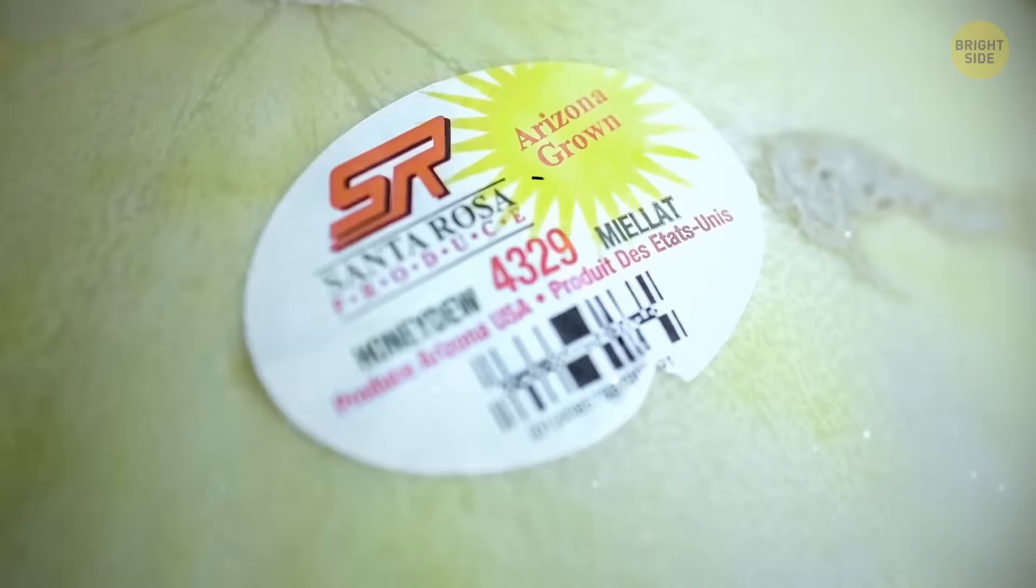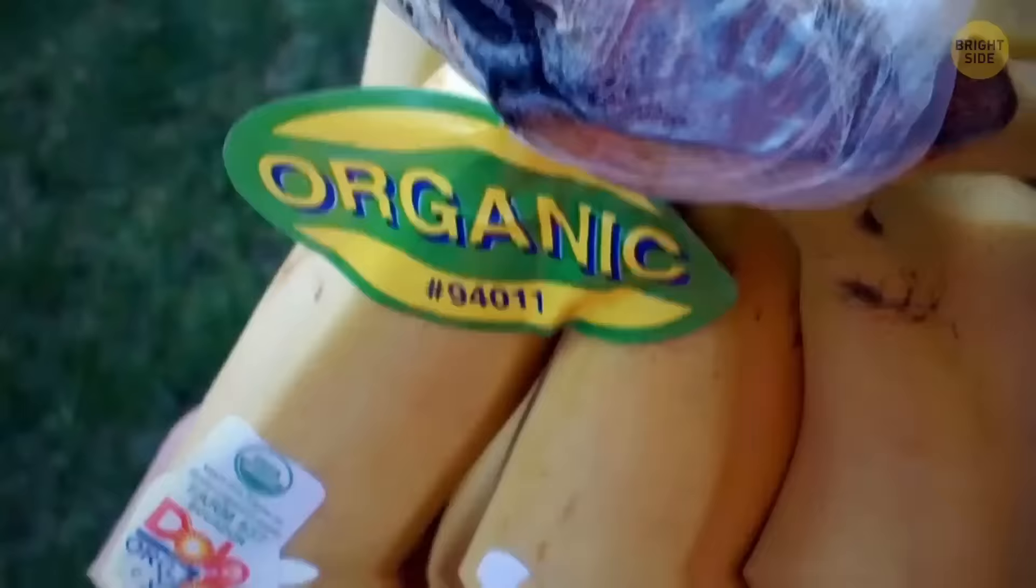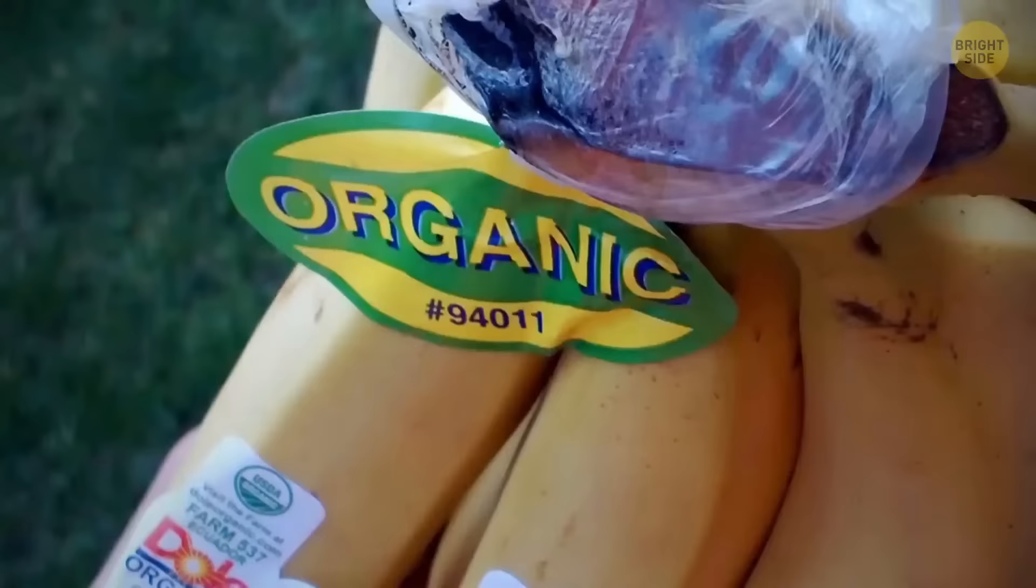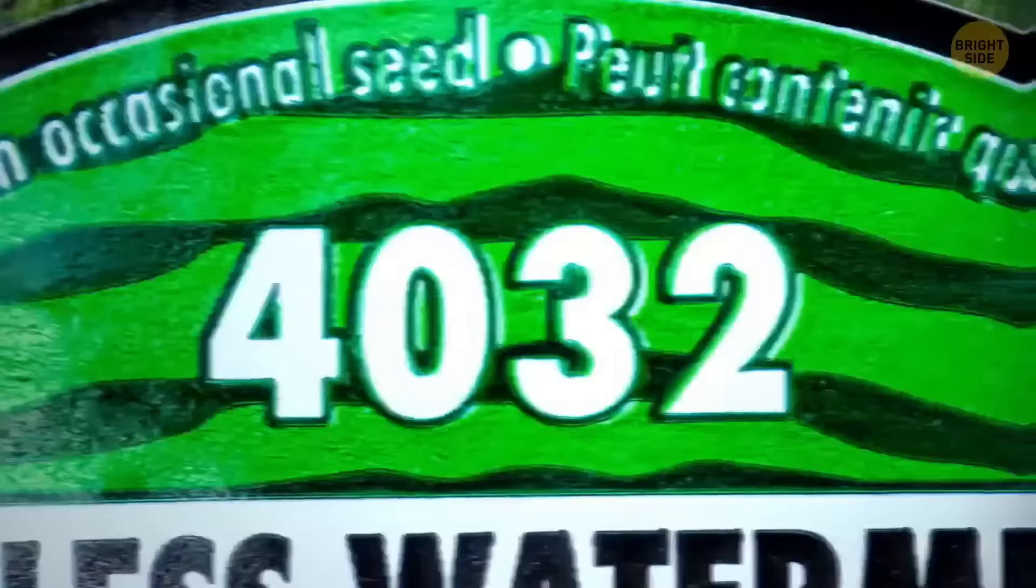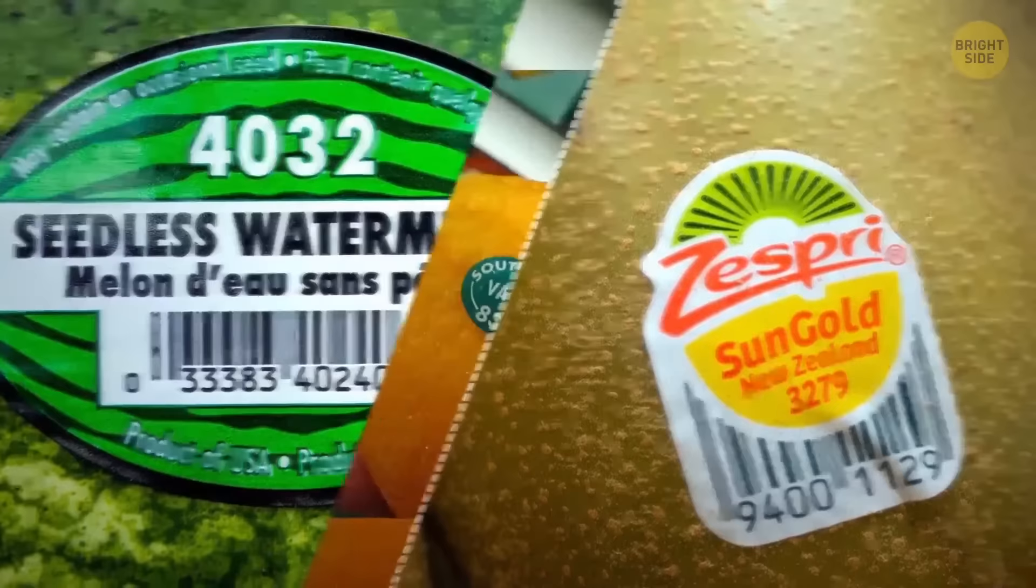Stickers on fruit seem to provide zero information about the product. But if you look closer, you'll find some numbers that can tell you more. A five-digit number where the first number is 9 is a good sign. You're about to buy an organic product. A four-digit number starting with a 3 or 4 means it was conventionally farmed. And if the number starts with an 8 and there are five digits, well, it's best to leave it on the shelf.